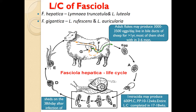Each adult fluke can lay about 3,000 to 3,500 eggs per day. Under favorable conditions, these eggs hatch into miracidia, which actively swim in water in search of the intermediate host. For Fasciola hepatica, Lymnaea truncatula and Lymnaea luteiola act as intermediate hosts, whereas for Fasciola gigantica, Lymnaea rufescens and Lymnaea auricularia act as intermediate hosts. Development of miracidia occurs in the snail intermediate host tissues, and the cercaria produced are called gymnocephalous cercaria.